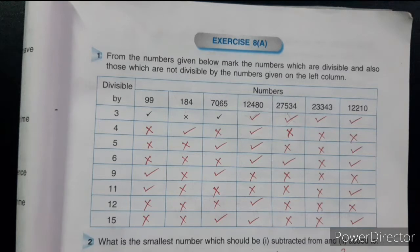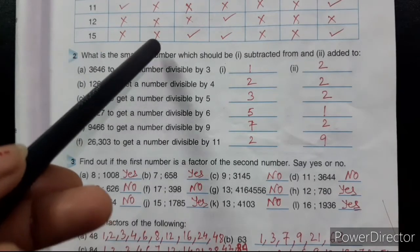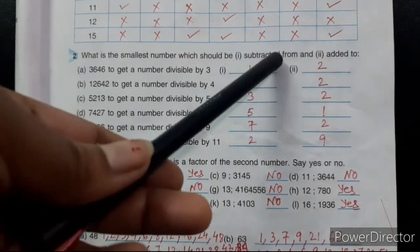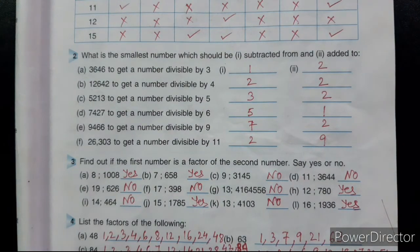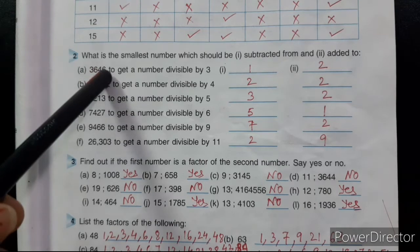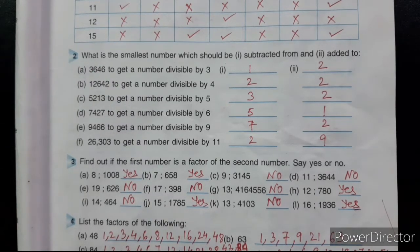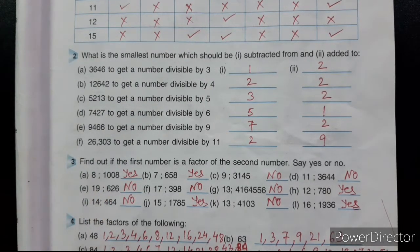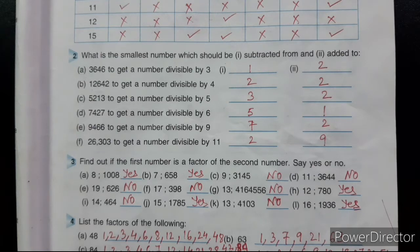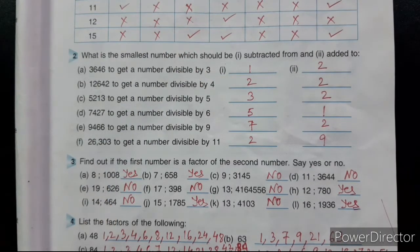Now the next sum — Sum number 2. What is the smallest number which should be subtracted from, and added to, a given number? We have to find two smallest numbers: if we subtract one from the number, the result is divisible by the given divisor; and if we add the second, the result is also divisible by that number.